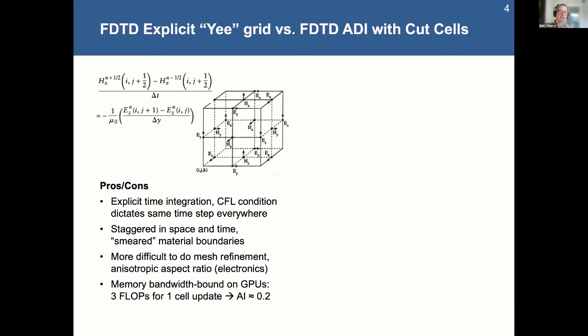Which don't really represent the nature of the sharp material boundaries. It's definitely more difficult to do mesh refinements and dealing with this anisotropic issue in electronics. And if you look at the performance of these, they're often memory bandwidth bound, especially on GPUs.